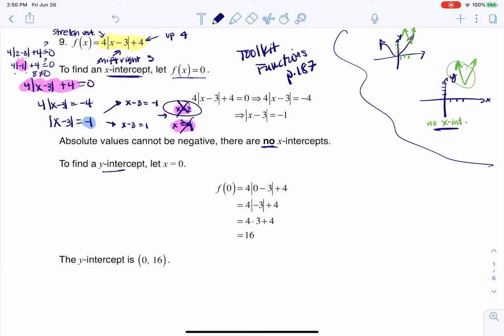Alright, now the y-intercept, I always find y-intercepts easier. All you have to do is let x equal 0. That's easier, in my opinion. So then I'm plugging in 0 for the function. 0 minus 3 is negative 3. The absolute value of negative 3 is 3. 4 times 3 is 12. 12 plus 4 is 16.